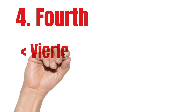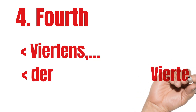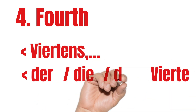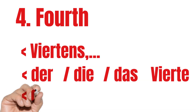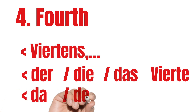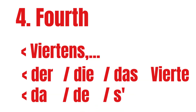Fourth. For numbered lists, fourth is Viertens. When we use articles: der Vierte, die Vierte, das Vierte. In Austrian German: der Vierte, die Vierte, das Vierte. With months, for instance, the 4th of April.